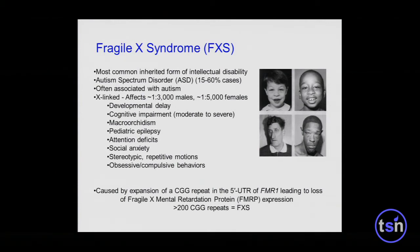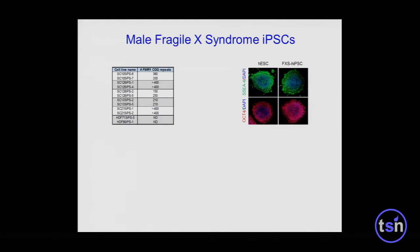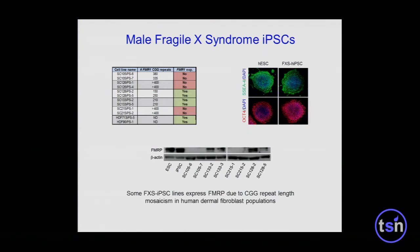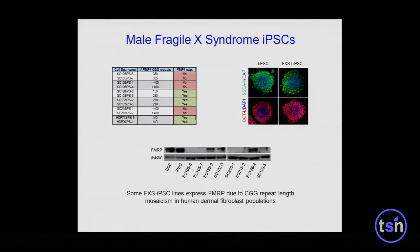FMRP is highly expressed in neurons, which explains the cognitive impairment and autistic behaviors upon loss of FMRP. We've generated iPS cells from five male Fragile X patients, and all of them possess greater than 200 repeats indicating full mutation Fragile X syndrome except for one patient. These express and don't express FMRP, which can be explained by CGG repeat length mosaicism within the dermal fibroblast population. Even though patients 133 and 128 were clinically diagnosed with Fragile X and autism, we were able to isolate iPS cells that still retain FMRP expression, so they'll serve as good controls.